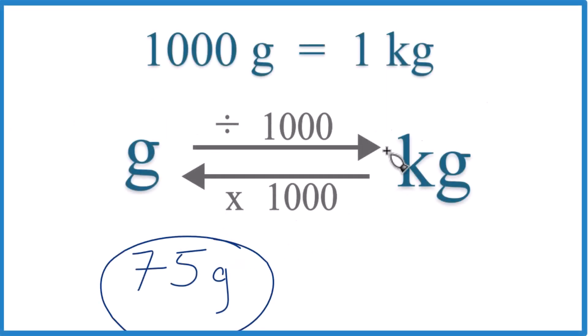So let's convert 75 grams to kilograms. Here's how you do it. 1,000 grams equals one kilogram. This is a conversion factor. This is something you should memorize.